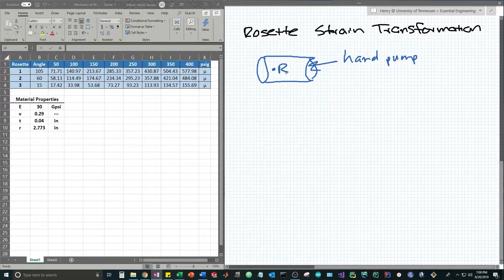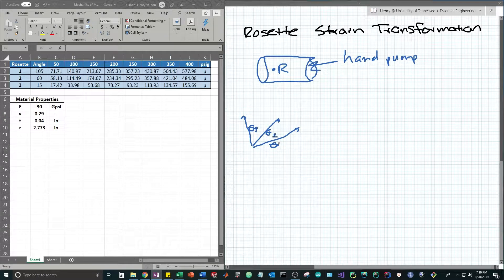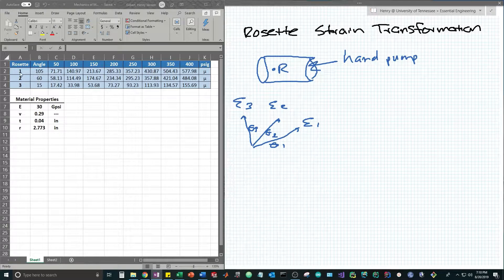Our strain rosette is placed here and its configuration involves three strain gauges at three different angles. Each strain gauge gives a different strain value. At each state we have three measured strain values given here. The gauge at 105 degrees gives 71 at 50 psi, 58 at 60 degrees, and 17 micro inches at 15 degrees.